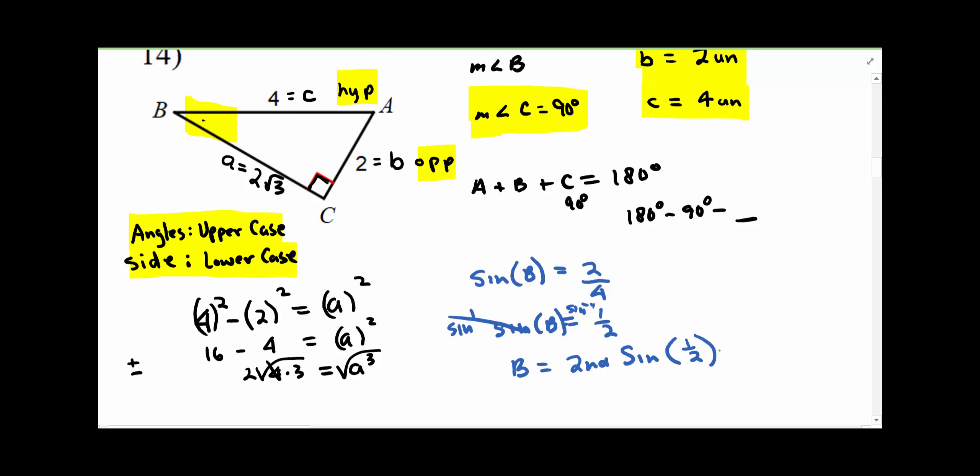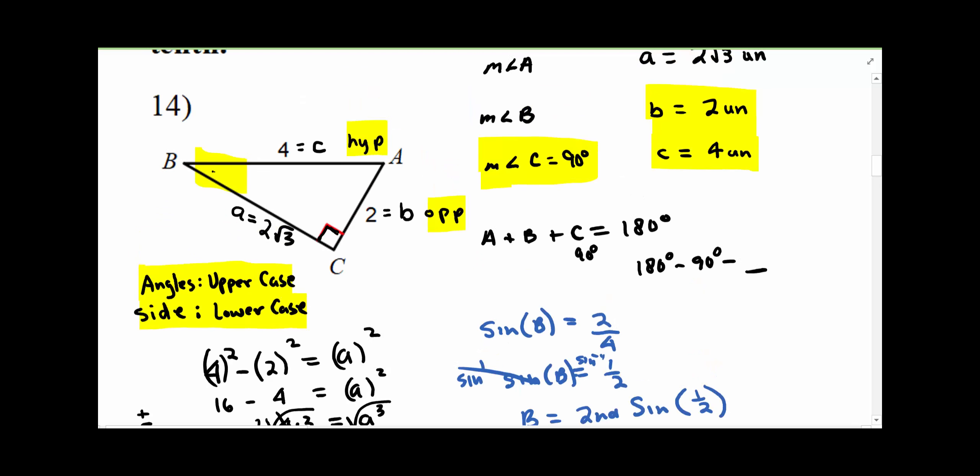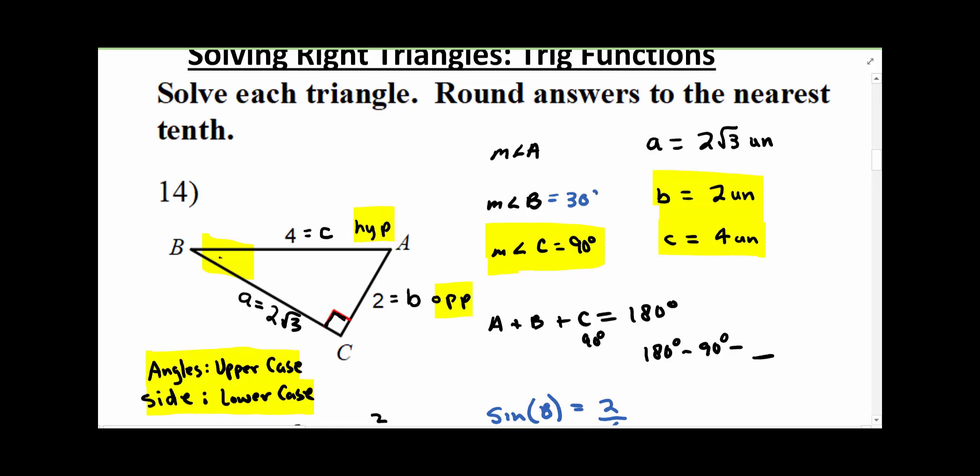Oh, and make sure if you're looking for degrees, make sure you have it in degree mode. We've got 30 degrees. So the measure of angle B is 30 degrees.